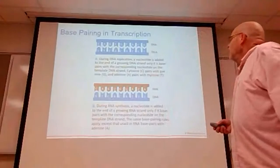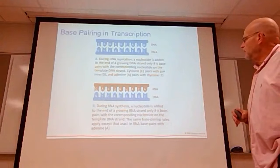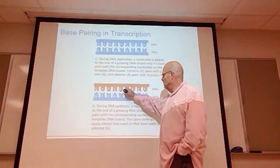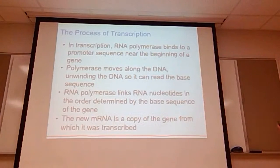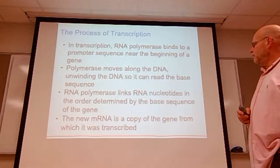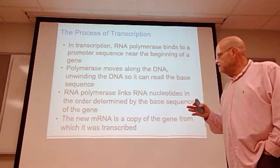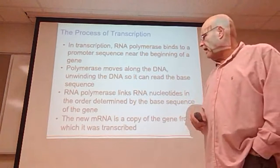We talked about the way base pairs occur in RNA and DNA. In transcription, RNA polymerase binds to a promoter sequence near the beginning of the gene. The polymerase then moves along the DNA, unwinds it so it can read the base sequences, and links RNA nucleotides in the order determined by the base sequence of the gene.